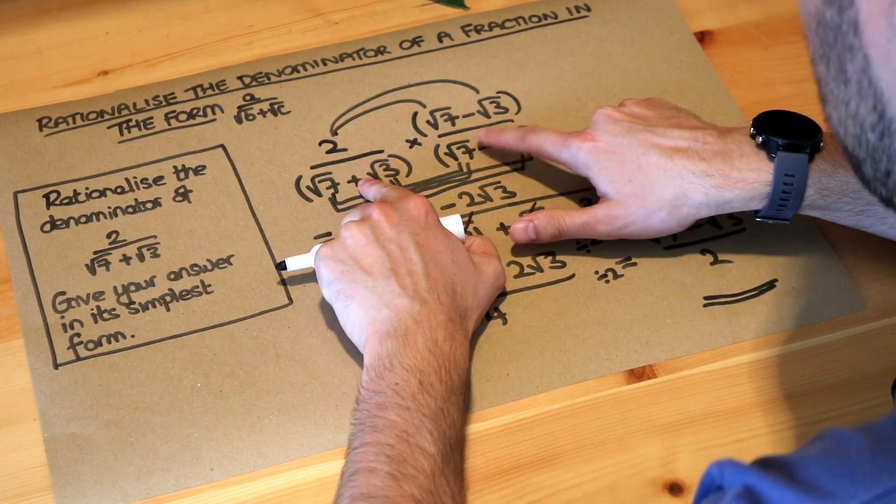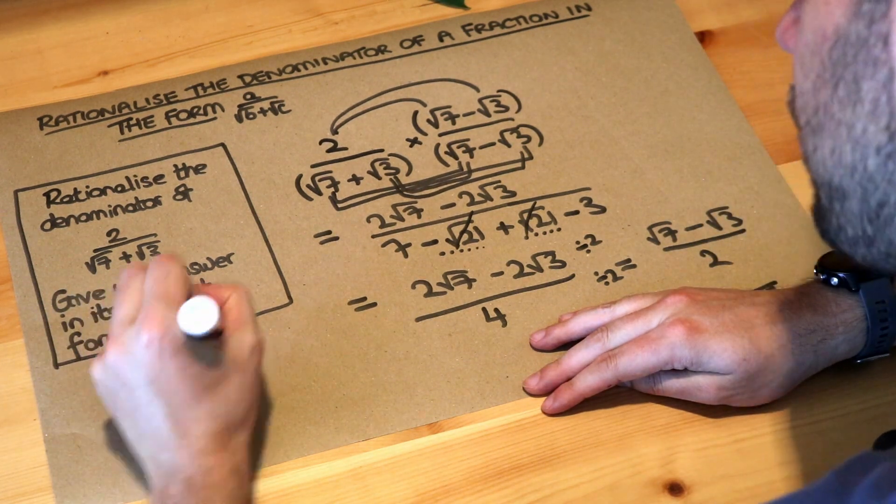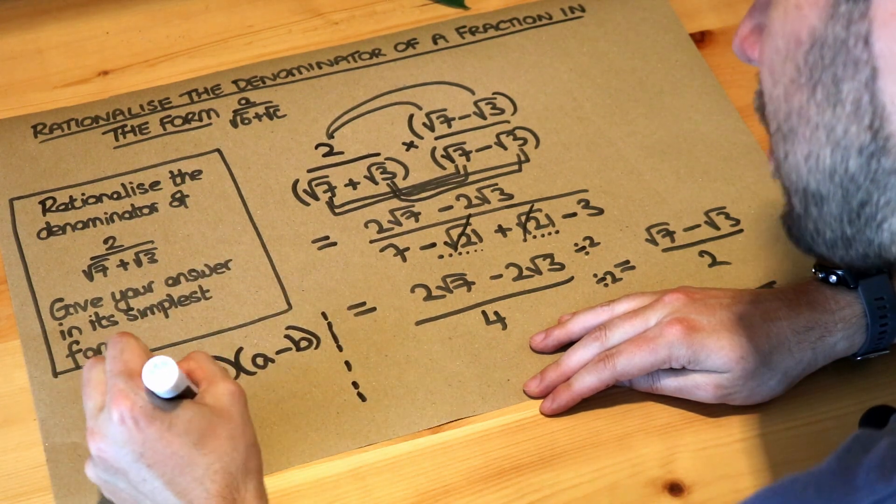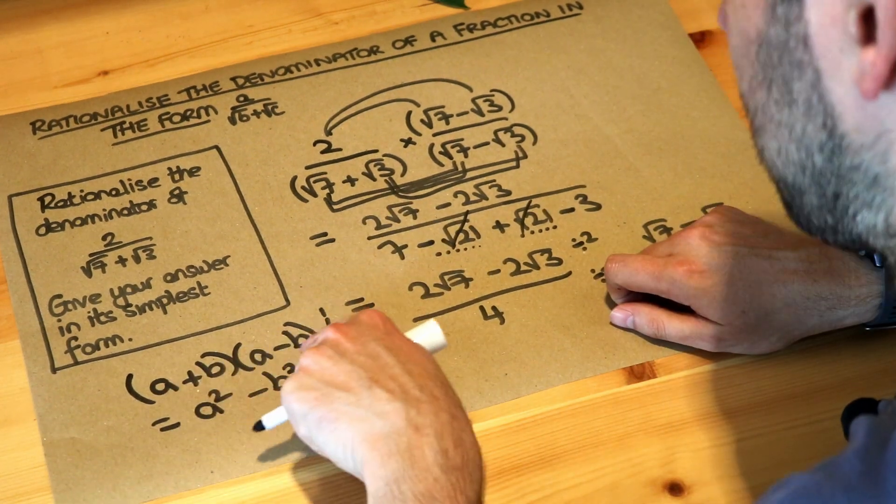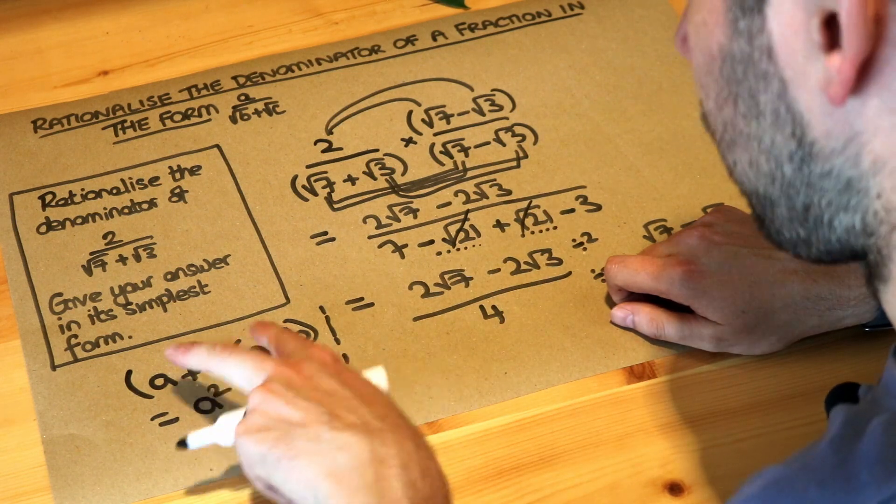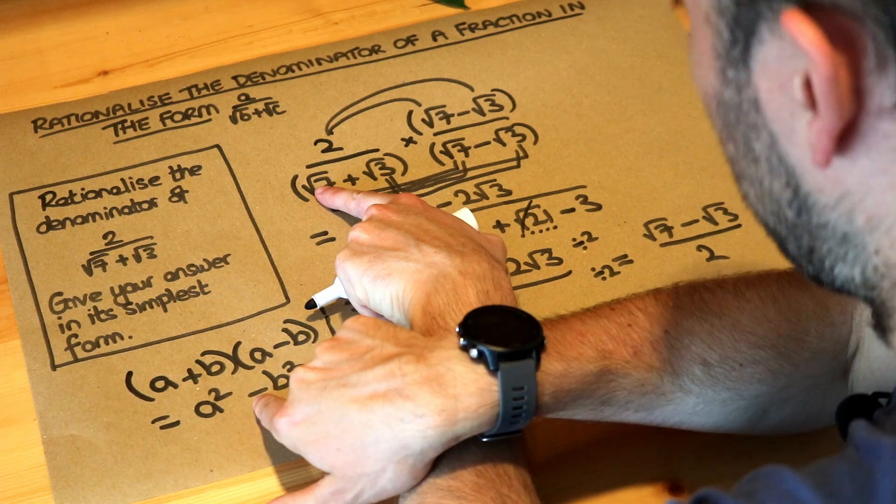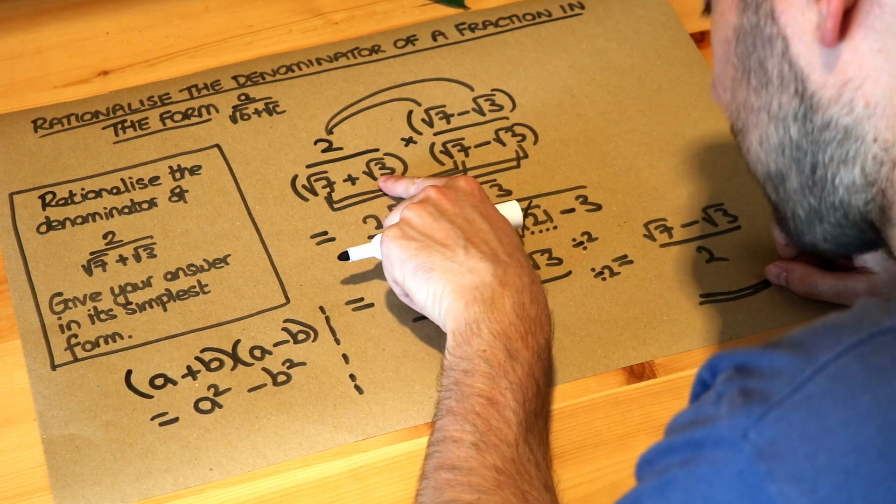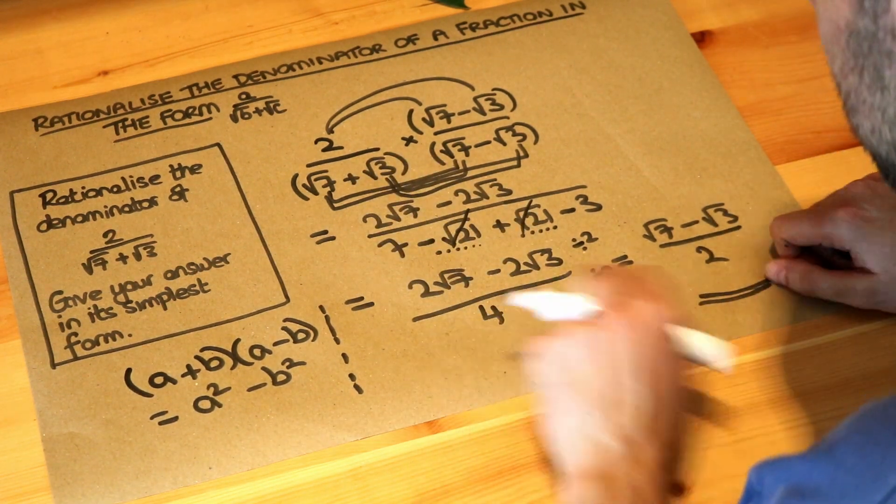There was a way to avoid multiplying out these two brackets. Remember, if you have a difference of two squares, so a plus b times a minus b, that expands to give a squared minus b squared. And that's exactly what we've got here. We've got a plus b, a minus b, root 7 plus root 3, root 7 minus root 3. So we know that expands to a squared minus b squared. So it's that term squared minus that term squared. That squared is 7 minus that squared is 3. It's 7 minus 3, which is 4. So we could have saved some time there.